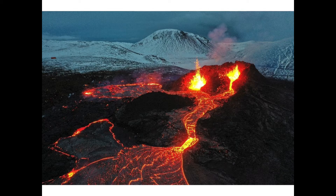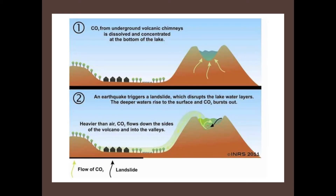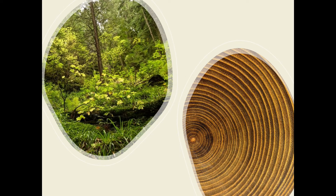Volcanic eruptions produce carbon dioxide — this is the 2021 eruption in Iceland. There's also Lake Nyos (N-Y-O-S), which has massive eruptions of carbon dioxide that have unfortunately killed many people, because the cloud of CO2 that gets created suffocates everything in its path. So volcanoes are definitely part of the carbon cycle.